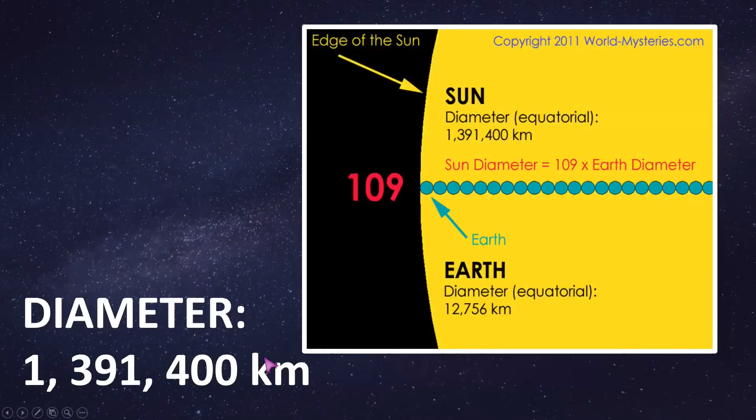The diameter of the sun is 1,391,400 kilometers, compared to Earth which is 12,756 kilometers. That's 109 times Earth's diameter.